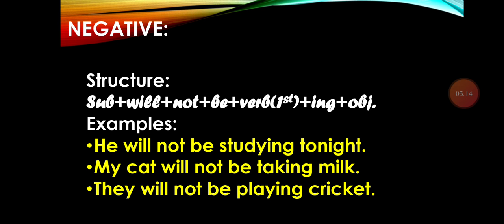I am repeating: 'not' always goes with the first helping verb. If there are two or three helping verbs — for example, 'He will have been' — 'will' is the first helping verb, 'have' is the second, and 'been' is the third. So 'not' goes with the first: 'He will not have been.' That structure is for your general knowledge. So: 'My cat will not be taking milk.' 'They will not be playing cricket.'